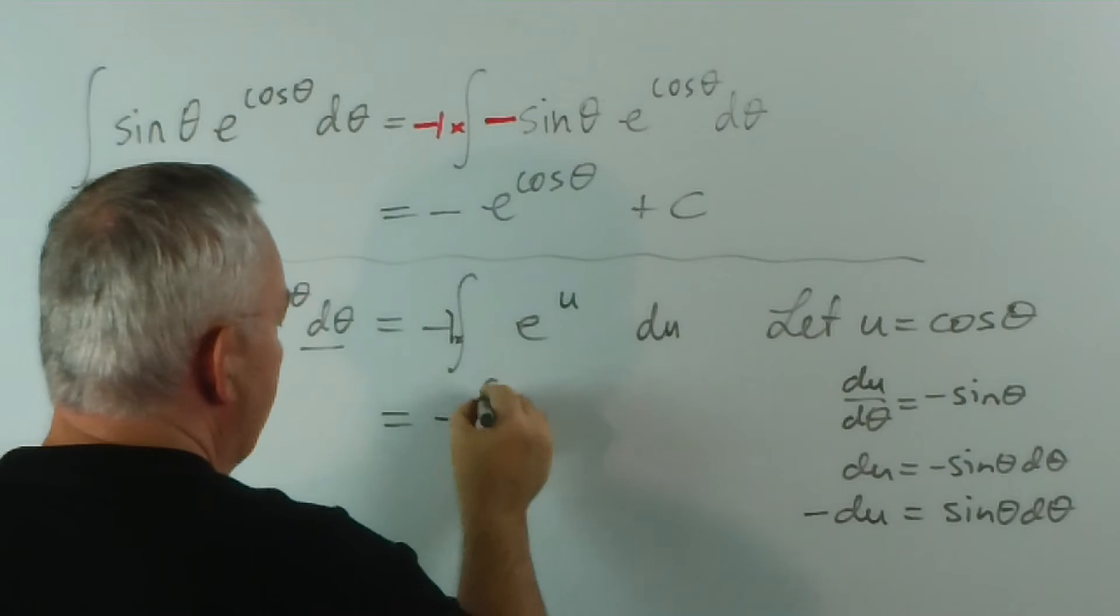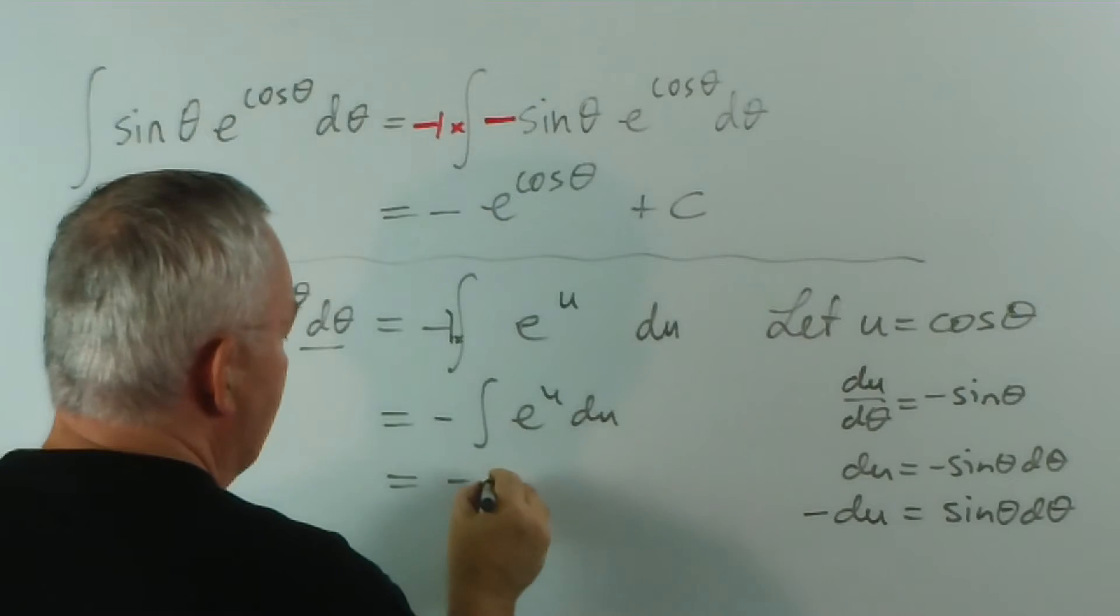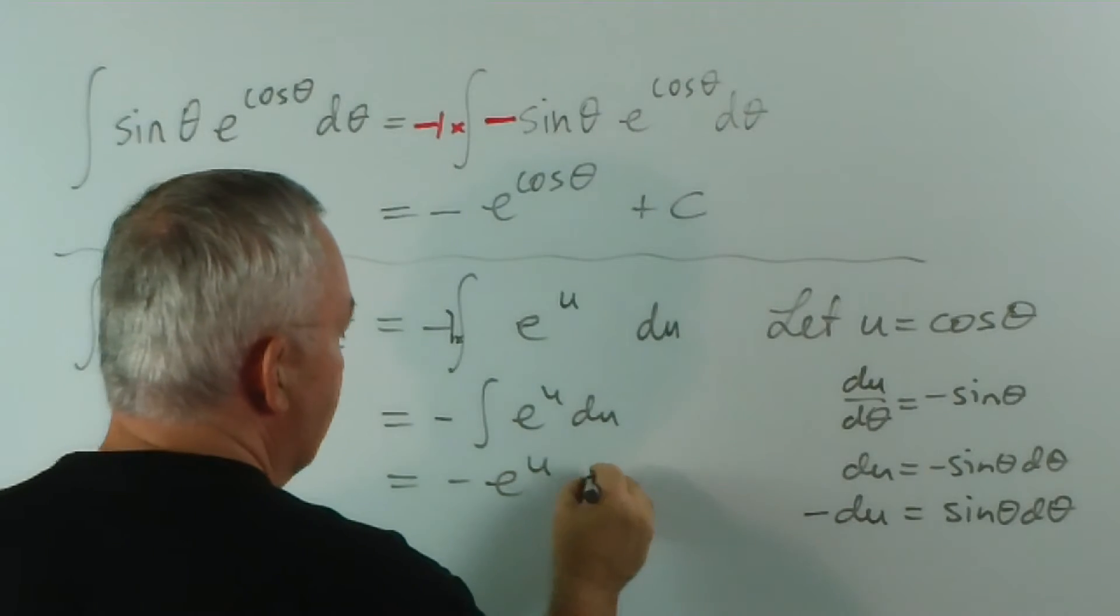So this equals minus the integral e to the u du, which is minus e to the u plus c.